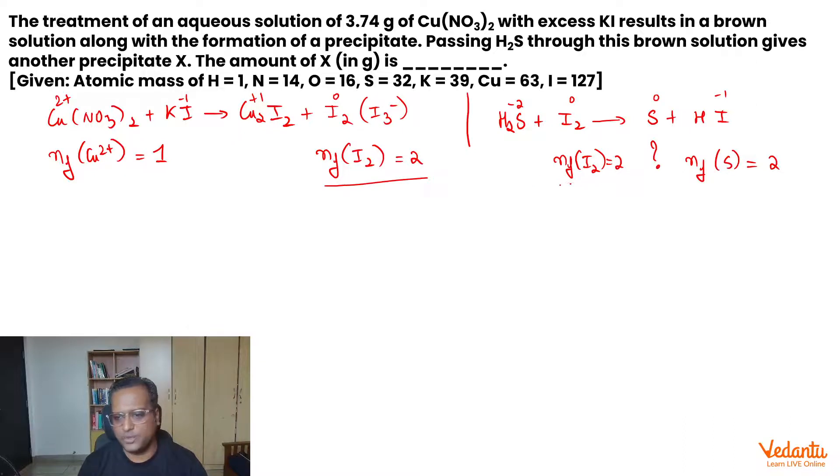So, because the n-factor of I₂ is equal in both the reactions, we can skip n-factor of I₂ if we want as we progress. How are we going to solve? For the first reaction, we can say number of equivalences of reacting species and the products formed are equal. Therefore, equivalences of Copper 2+ should be equal to equivalences of I₂.